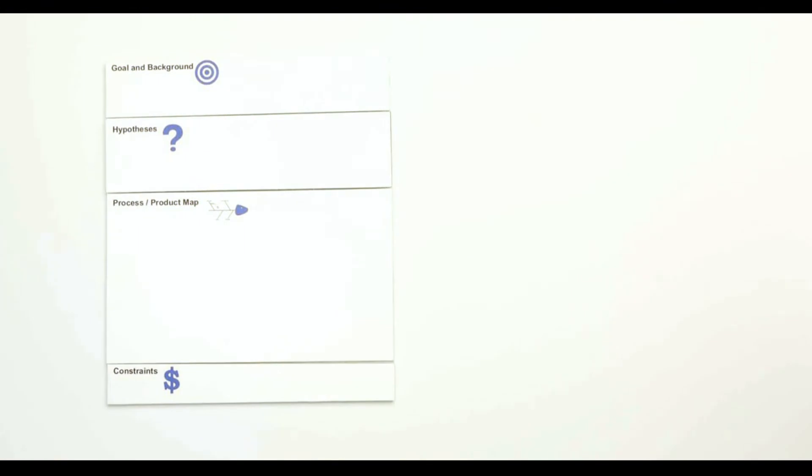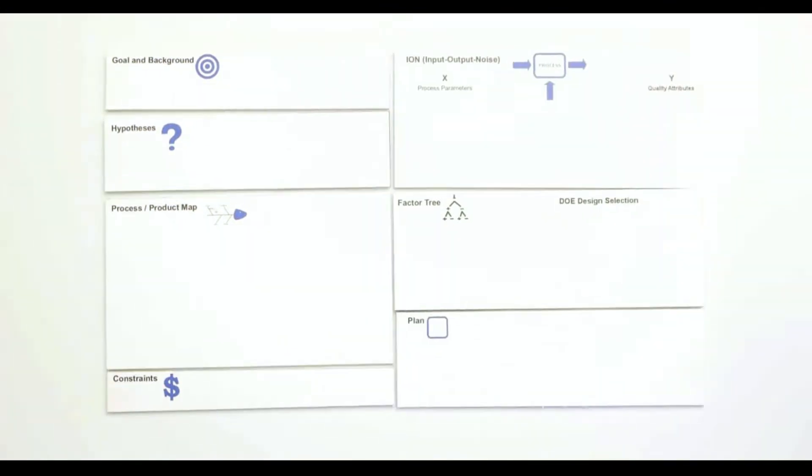The factor tree communicates the design of the experiment, and finally the plan to show the progress and next steps of the experiment. But it's not sufficient to just enumerate the six building blocks.